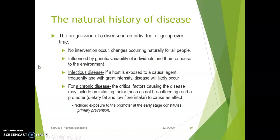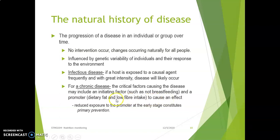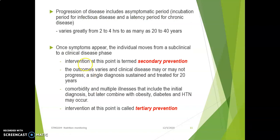The natural history of disease is the progression of disease in an individual or group over time. Some diseases progress very quickly — food poisoning, for example, can occur in just two hours. For infectious disease, if a host is exposed to a causal agent with great intensity, disease will likely occur. For chronic disease, critical factors may include an initiating factor such as not breastfeeding, and a promoter such as high dietary fat and low fiber intake to cause malnutrition.